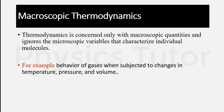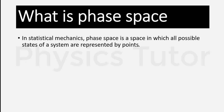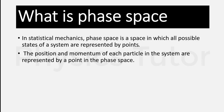To study a system on the microscopic level, we first need to know about phase space. In statistical mechanics, phase space is a space in which all possible states of a system are represented by points. As shown in the diagram, it represents a zero point, and with the increase in time, what will be the change in position and momentum. It tells us about the position and momentum of each particle in the system.